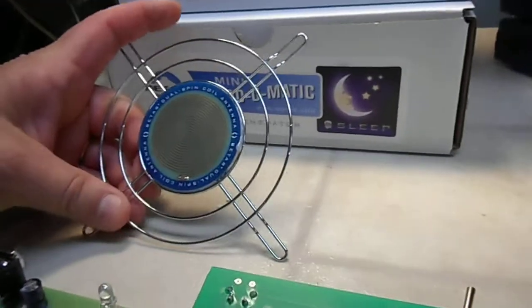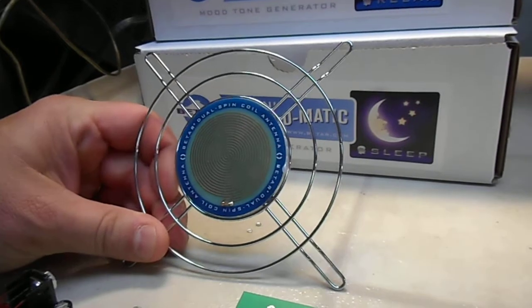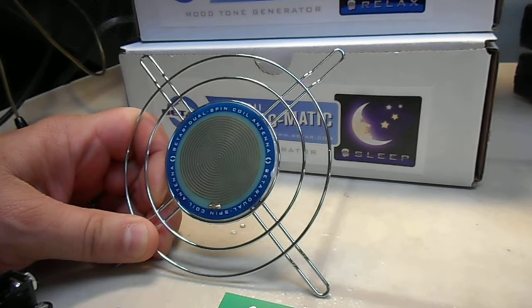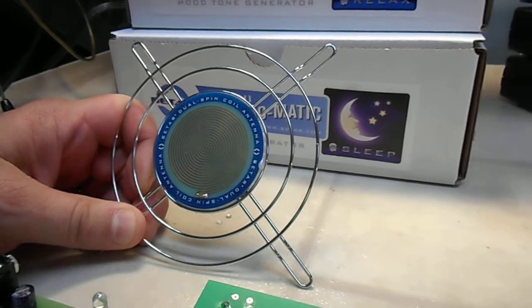Here's another example of the dual spin coil antenna. It's really in all of our Baytar products. The idea is that by sending the signal through a clockwise and counter-clockwise rotation at the same time,